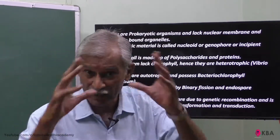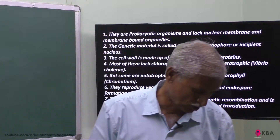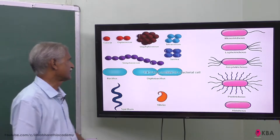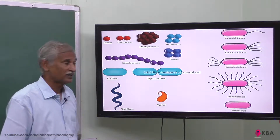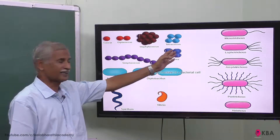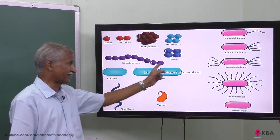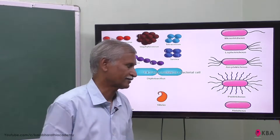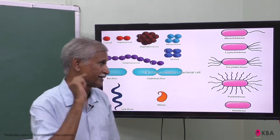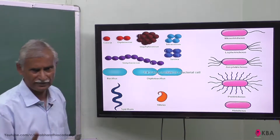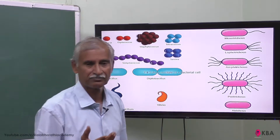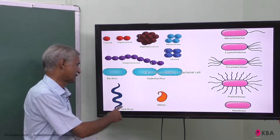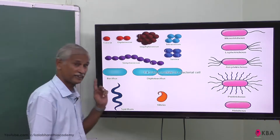Bacteria are also classified by their shapes. Spherical or round bacteria are called cocci. Two cocci together are diplococci; clusters are staphylococci; groups of four are tetracocci. Rod-shaped bacteria are called bacillus — examples include Mycobacterium and Bacillus. Two rods together are diplobacillus. Spiral-shaped bacteria are called spirillum.